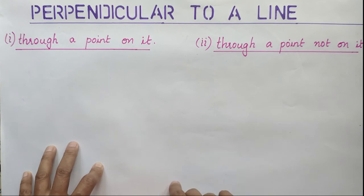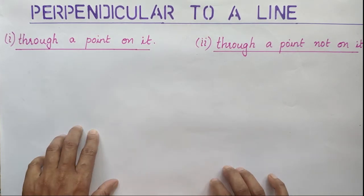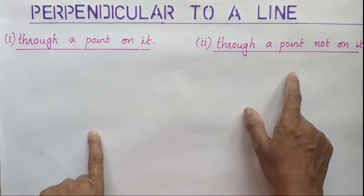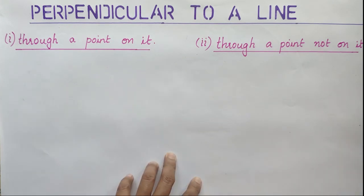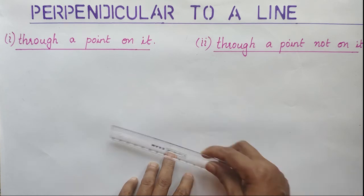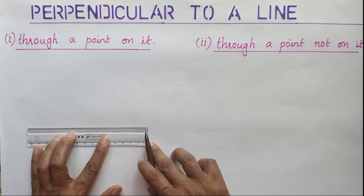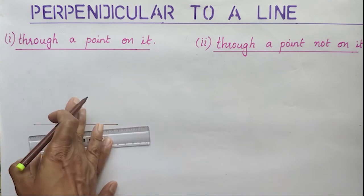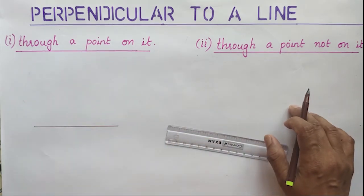Hi students, today we are discussing how to construct a perpendicular to a line. Two cases are there: first case, through a point on it, and the second case, through a point not on it. We are discussing both cases in this video. On the left side I am drawing the first one and on the right side I will draw the second case.